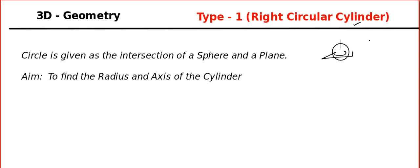Basically, you should be good with lines, planes, spheres and intersection of sphere and a plane. Our aim is very simple: we are going to find the radius of the cylinder and axis of the cylinder so that we can use the method we learned in the last video, the type 1 method.